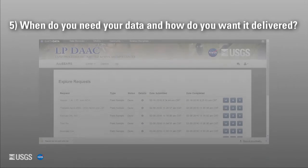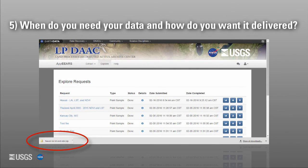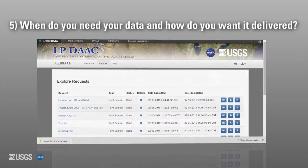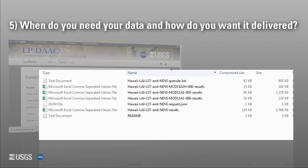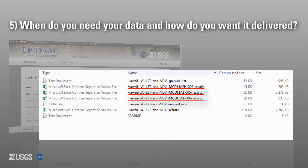Once you have selected to download your data, APPEARS will immediately provide you with an analysis ready data download bundle. All data output files will be tied to the sample name you previously selected. The data download bundle includes a granule list, a CSV file of your total results, CSV files for the results of each of the specific products you have chosen, a readme text file, and a JSON file to share the request parameters with your colleagues.